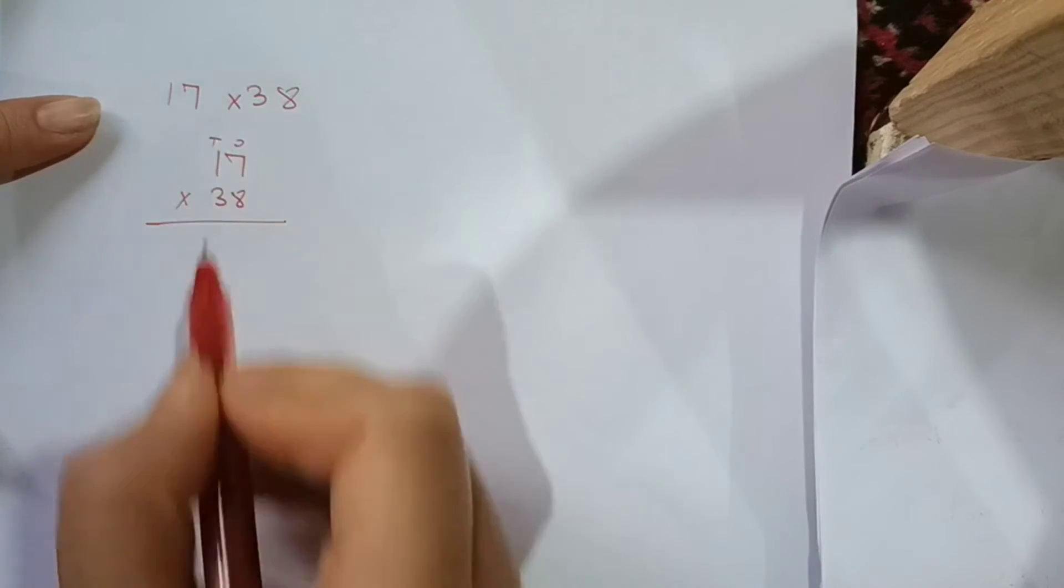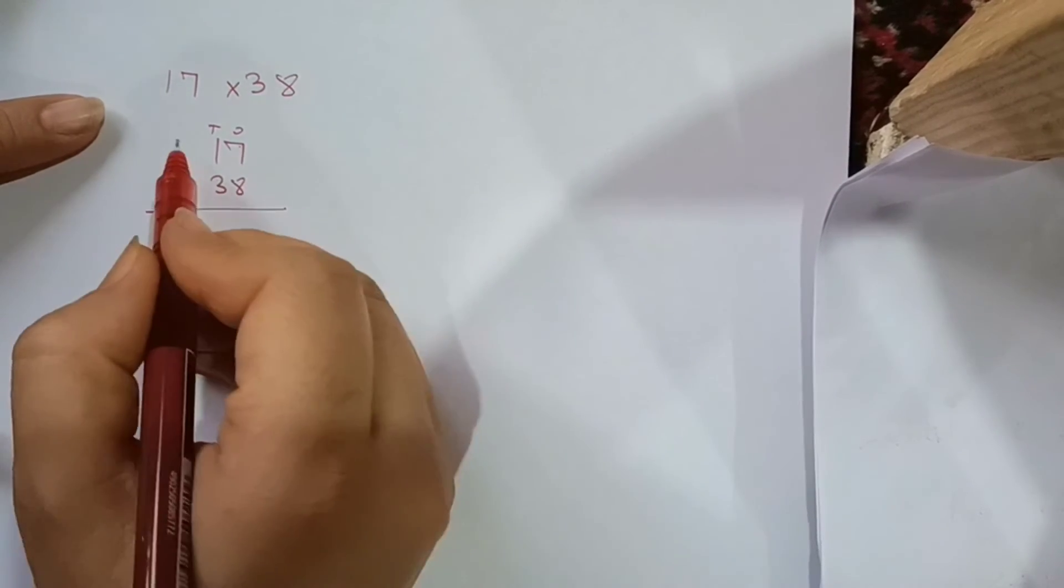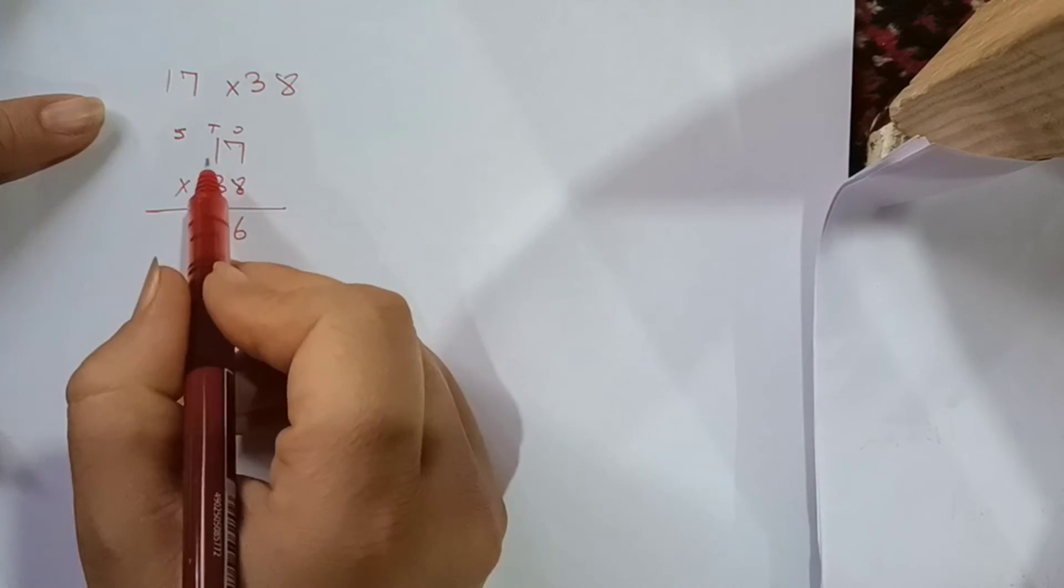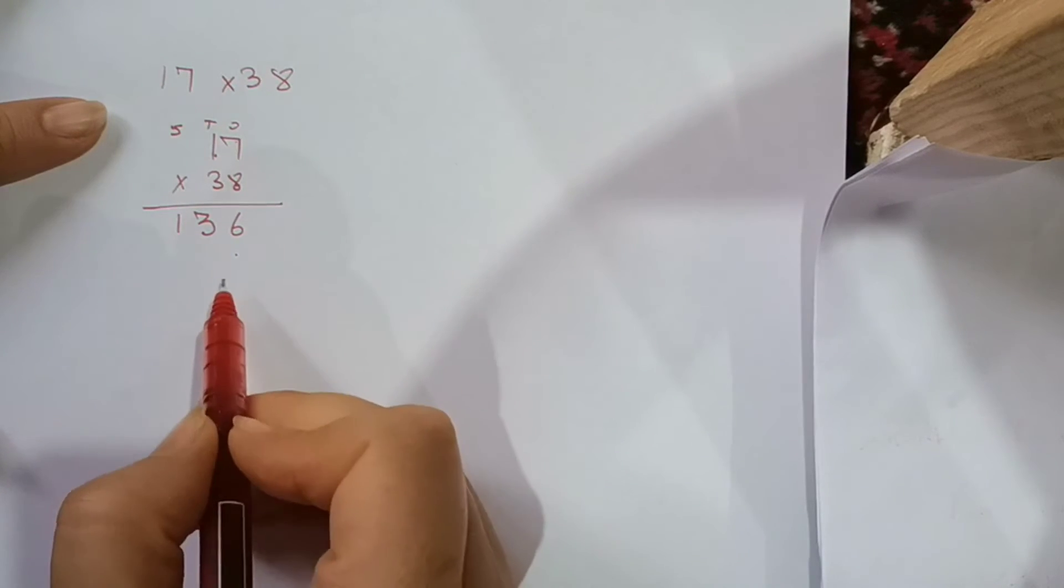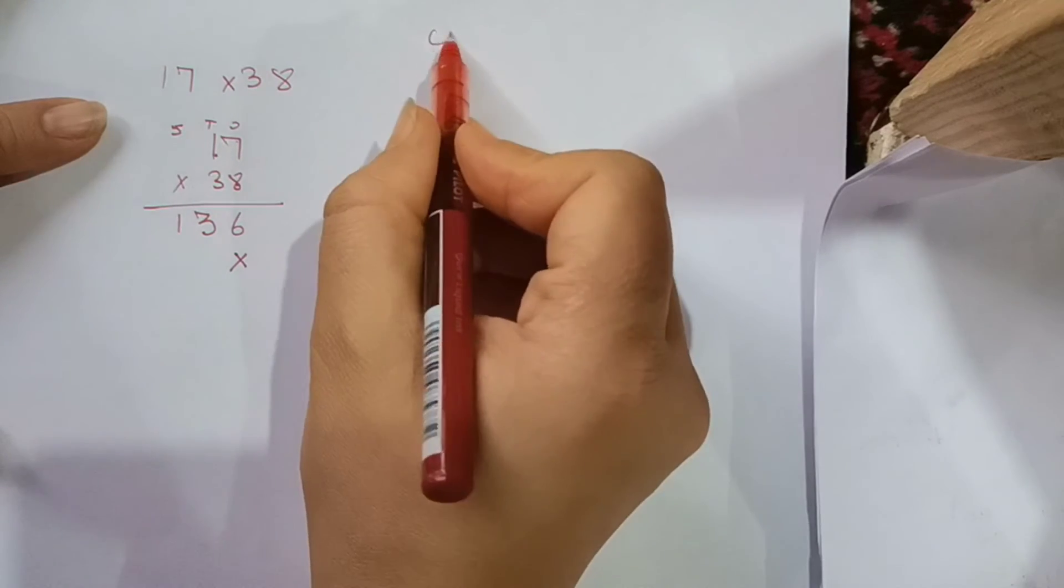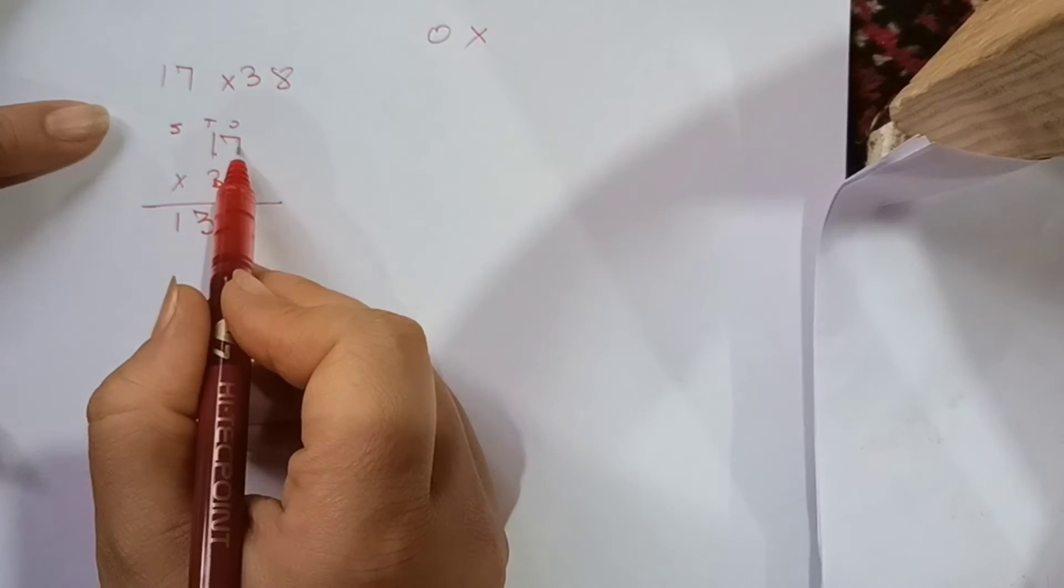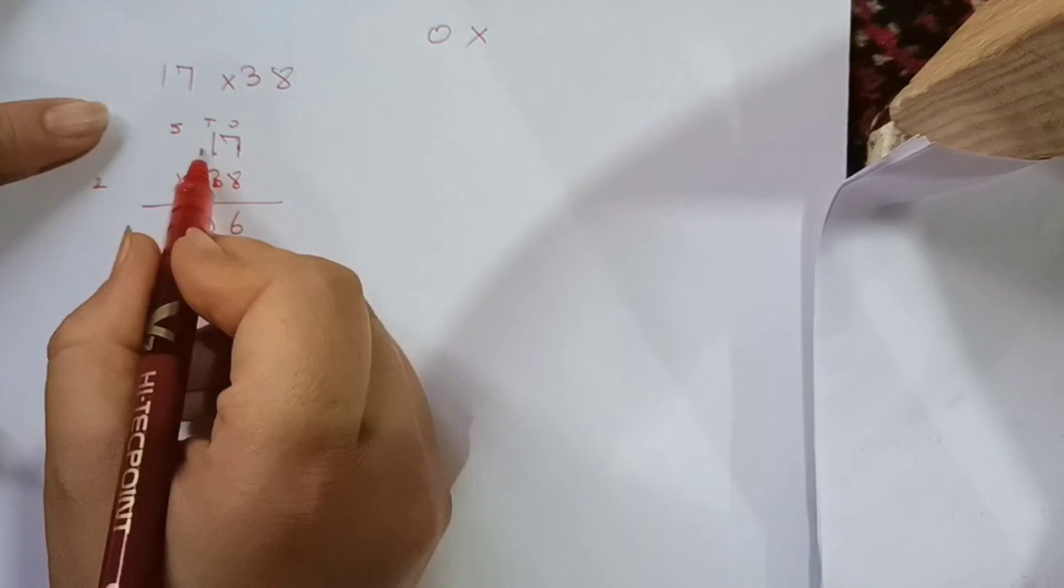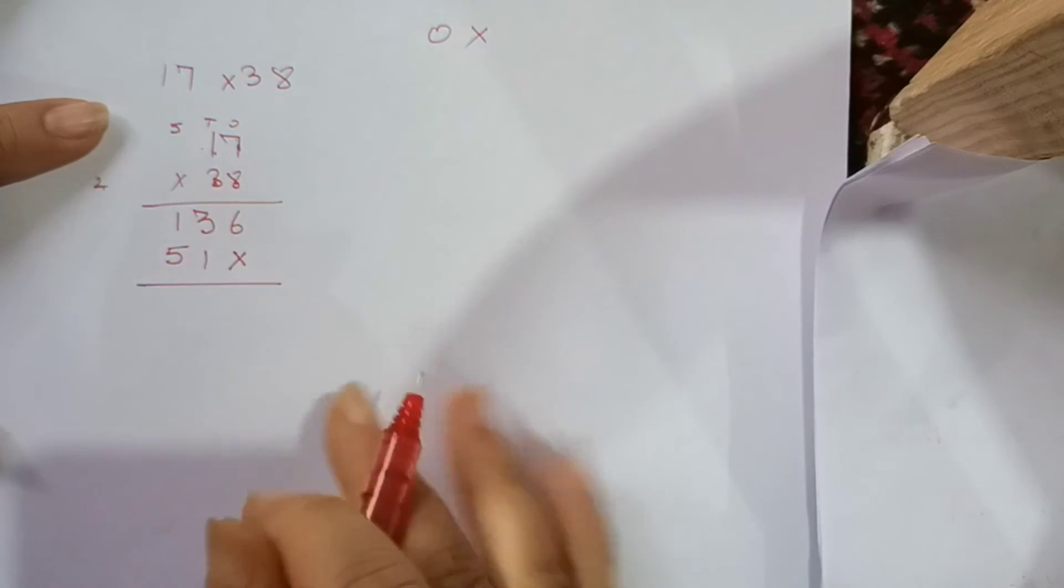We will multiply. This is the ones and the ones in place. 8 times 7 is 56, 5 carry, 6. 8 times 1 is 8 plus 5 is 13. Now this place, we will cross this place. Then we will multiply the number of tens with ones place. 3 times 7 are 21, 2 carry out. 3 times 1 is 3 plus 2 is 5.